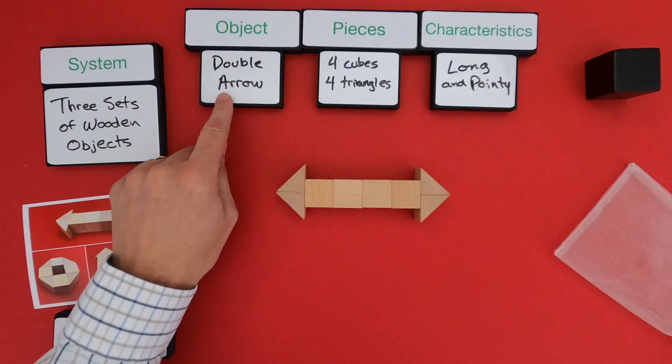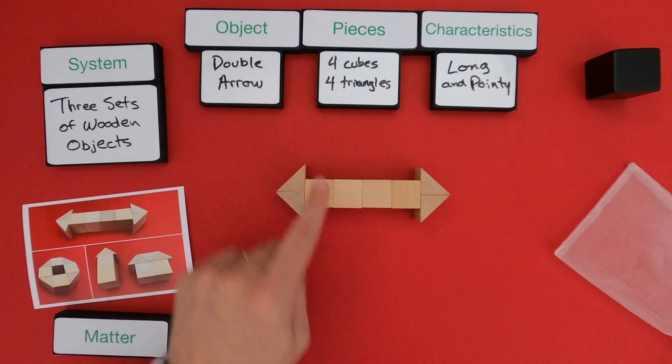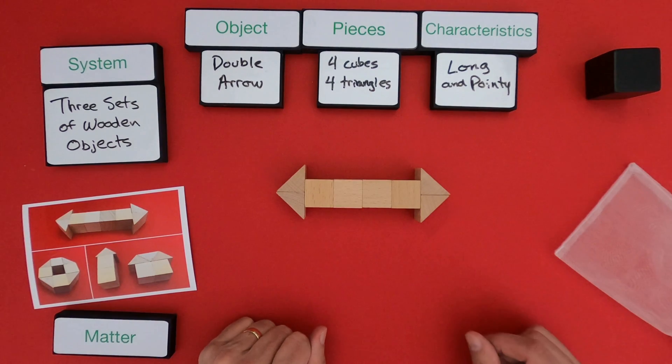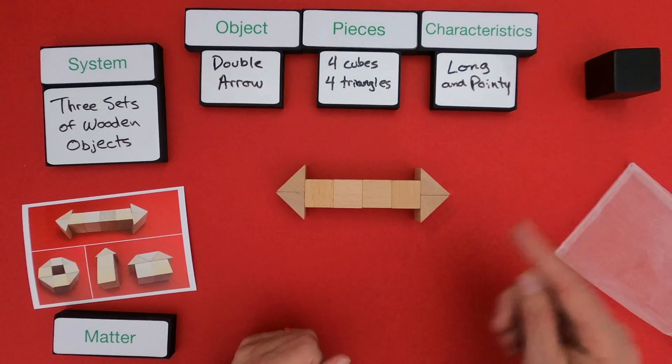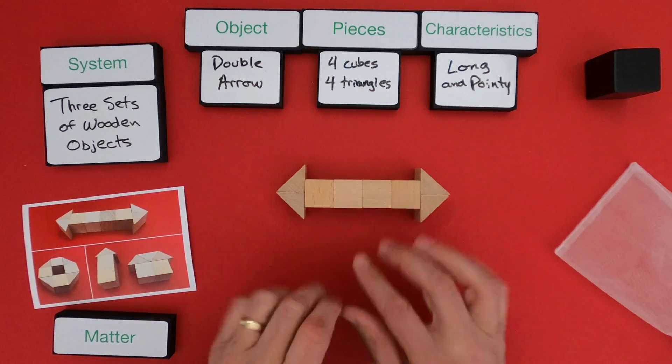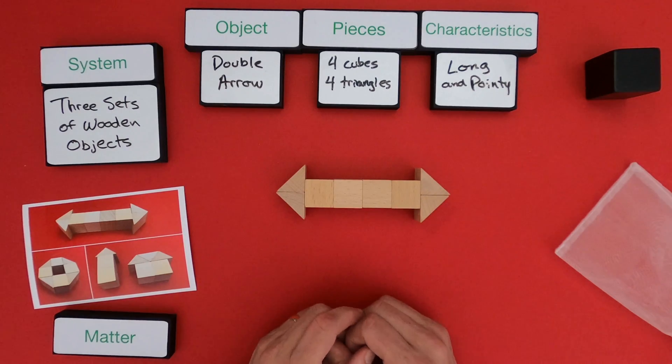So this object is called the double arrow. It's made up of four cubes, so wooden cubes, and then four of these triangles. And then the characteristics are, I'm just describing the object. In this case, I think it's kind of long and it's going to be pointy. So now let me rearrange these and look at the next object.